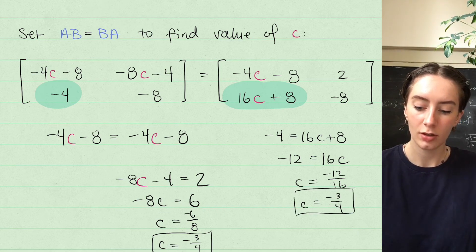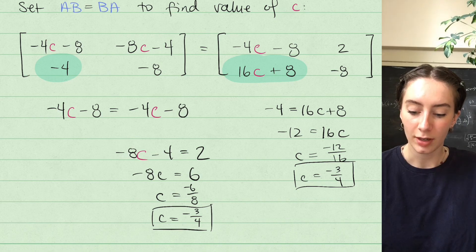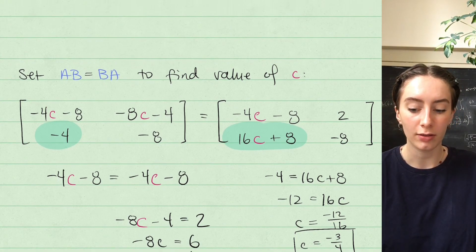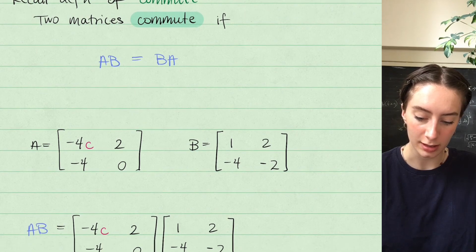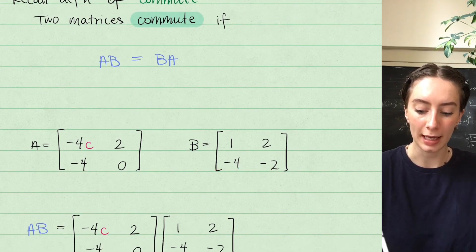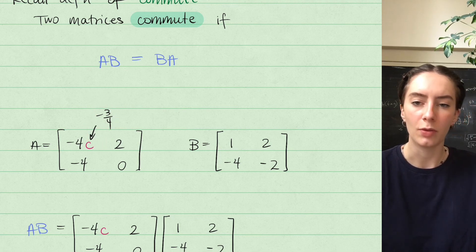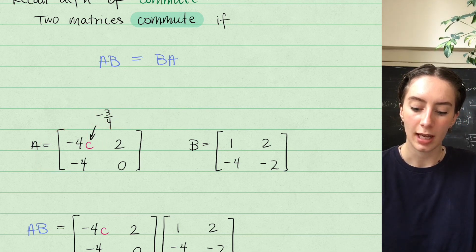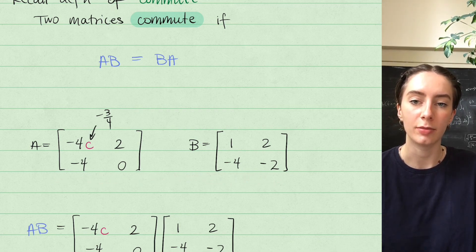Everything makes sense — our value of C is negative 3 quarters. This is the only value that makes matrices A and B commute, meaning when C equals negative 3 quarters, it's the only value for which A times B equals B times A.